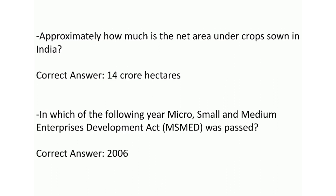Approximately how much is the net area under crops shown in India? Correct answer is 14 crore hectares. In which of the following years was the Micro, Small and Medium Enterprise Development Act (MSMED) passed? Correct answer is 2006.